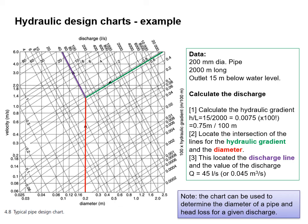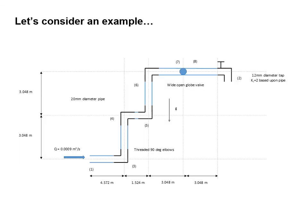You also need to be aware that the chart can be used to determine the diameter of a pipe and head loss for a given discharge. In the tutorial session we're going to look at practical problems where we apply this theory and calculate losses across various fittings in a pipe network — for example, a combination of 90-degree elbows, a valve, and a final tap.